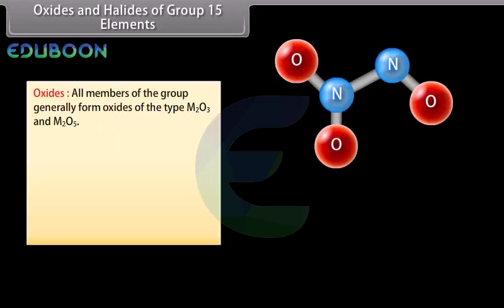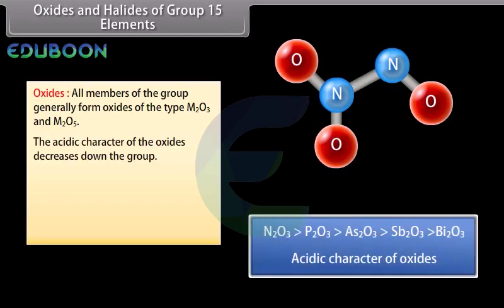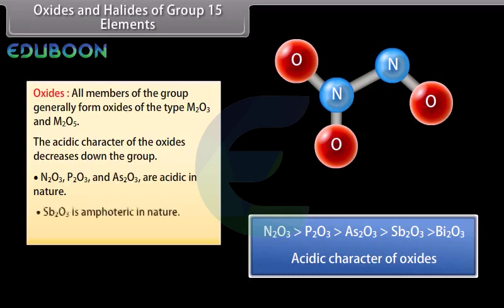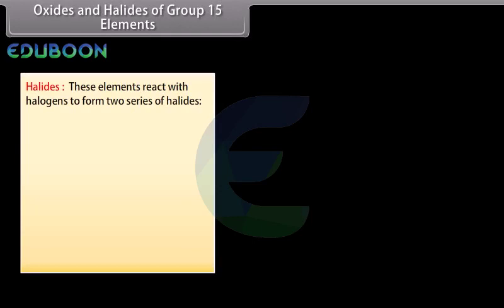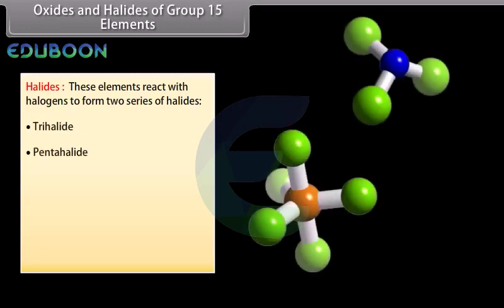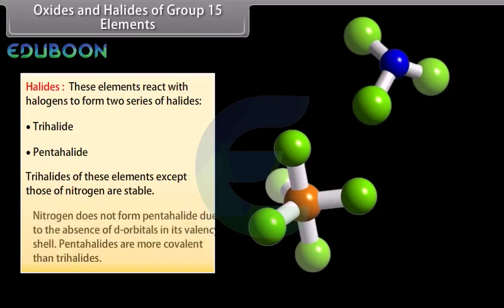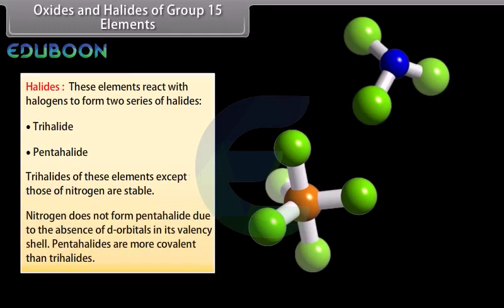Oxides and halides of group 15 elements: All members generally form oxides of the type M2O3 and M2O5. The acidic character of oxides decreases down the group. N2O3, P2O3 and As2O3 are acidic; Sb2O3 is amphoteric; and Bi2O3 is basic in nature. Regarding halides, these elements react with halogens to form two series: trihalides and pentahalides. Trihalides of these elements, except those of nitrogen, are stable. Nitrogen does not form pentahalide due to the absence of d-orbitals in its valence shell. Pentahalides are more covalent than trihalides.